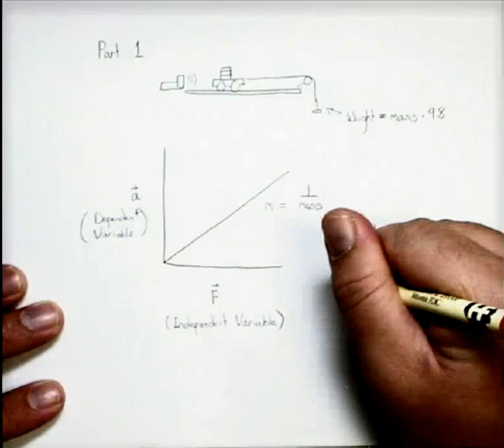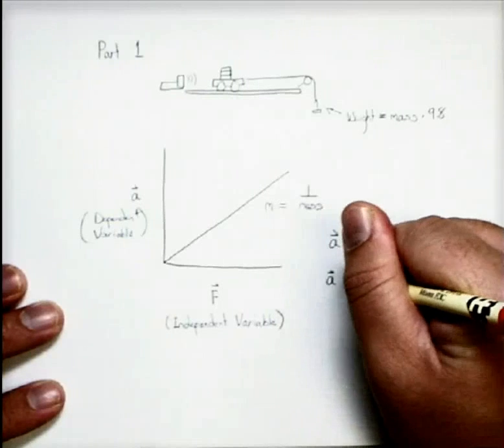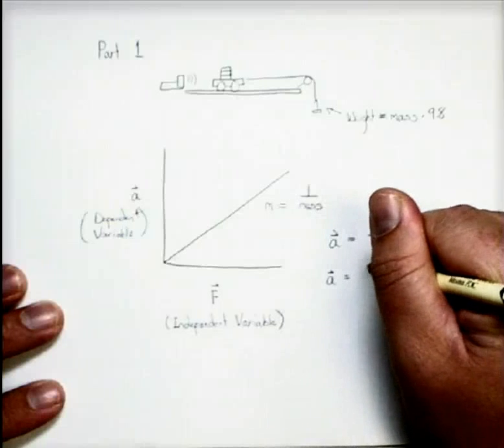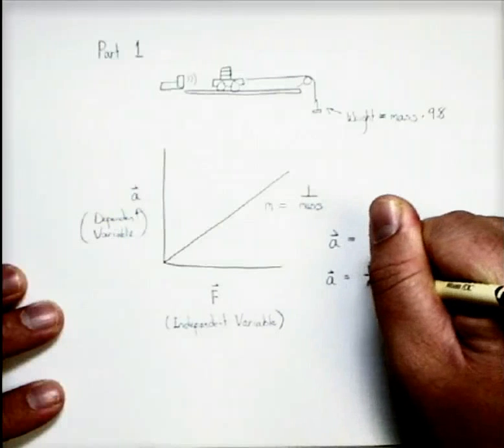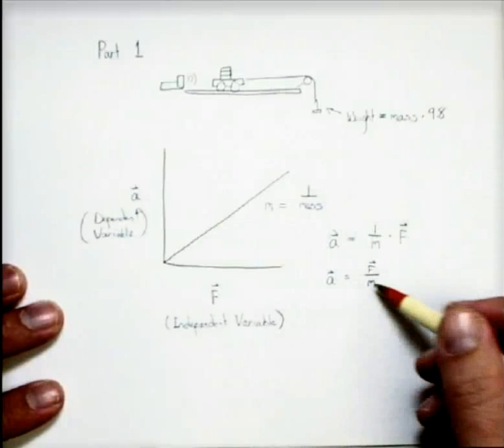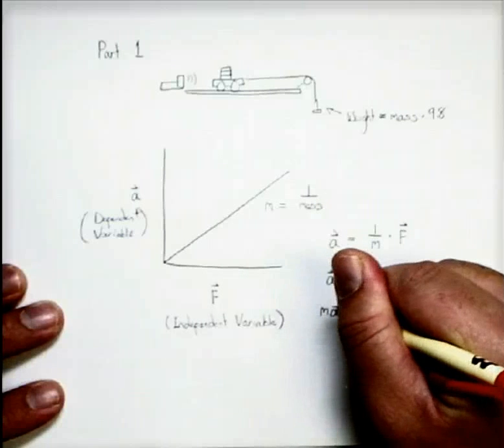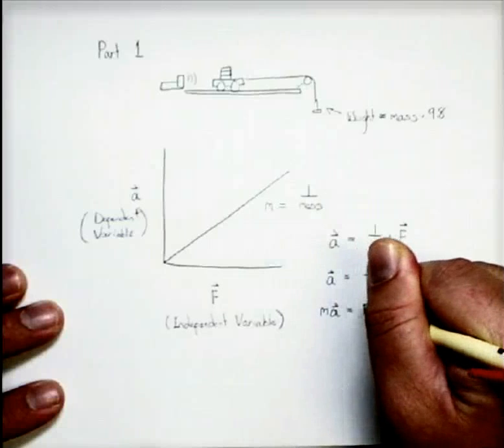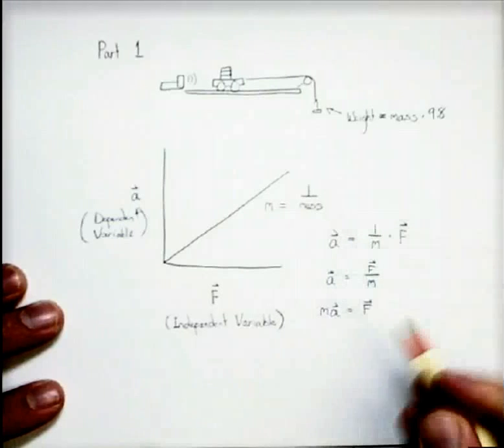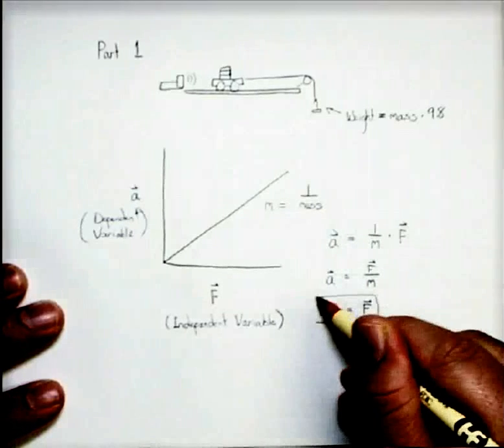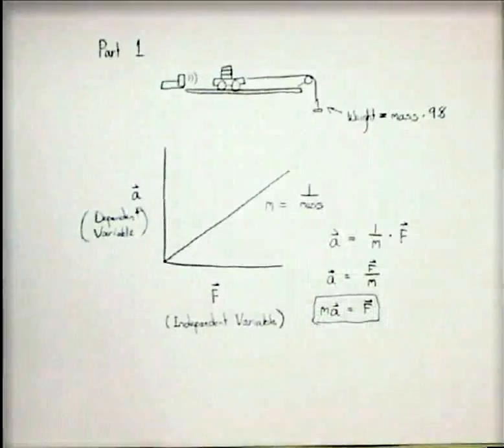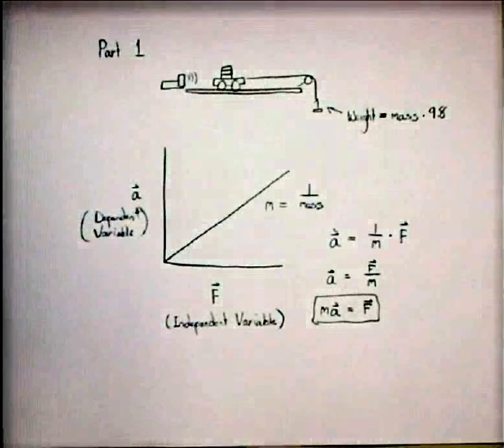And so if we were to put that together, we would get acceleration equals force divided by mass. And if we rearrange this, we would find that mass times acceleration is equal to force, this being Newton's second law of motion. Very fascinating result.